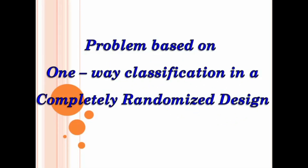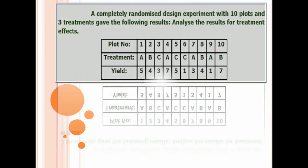Hello students, in this video lecture we will discuss problems based on one-way classification in a completely randomized design. We know what is meant by one-way classification. A completely randomized design experiment with 10 different plots and three different treatments gave the following results. We are going to analyze the results for treatment effect.